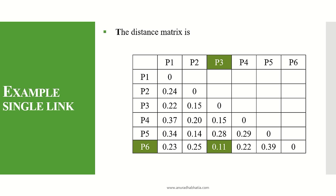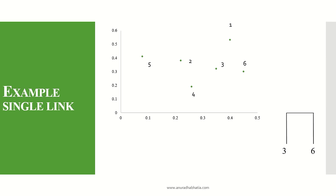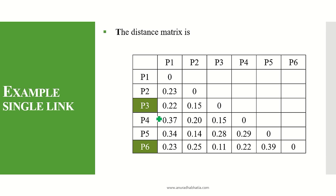From the distance matrix, we find the minimum element. The minimum value is 0.11, which is the distance between P3 and P6. So the first cluster formed is {P3, P6}. On the graph, P3 and P6 are plotted as one cluster, and in the dendrogram P3 and P6 are connected. We now need to recalculate the distance matrix with this new cluster.